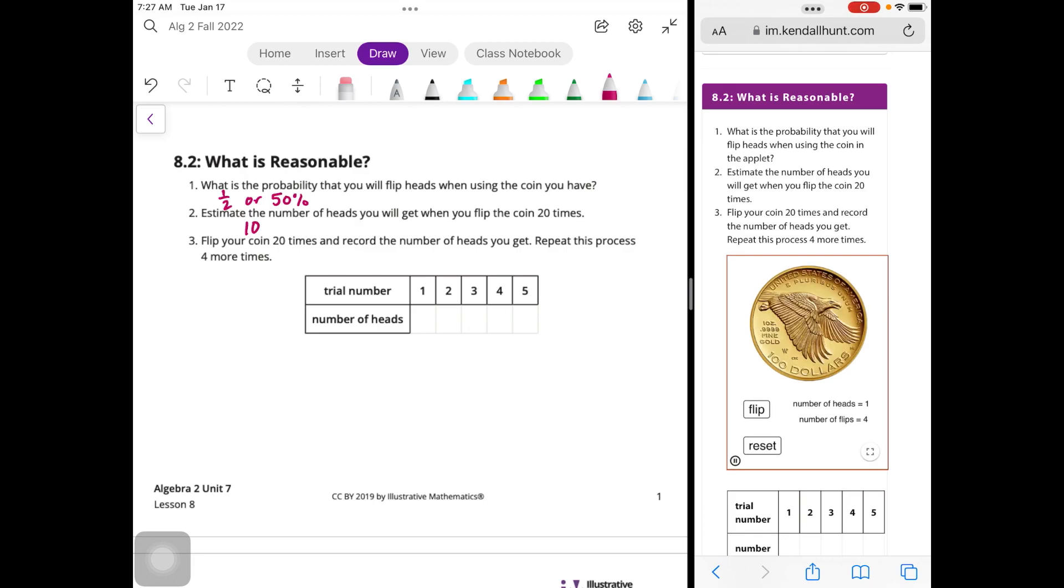Until we get 20 flips. And if you have a regular coin, you could do this with just a regular coin also. Now we're up to nine flips. And we're going to do 20 times. There's 16, 17. So far we've got nine heads. And we got 10 heads in the first run. So let's reset that. And then we'll do it again for 20 more flips. This time we got seven.